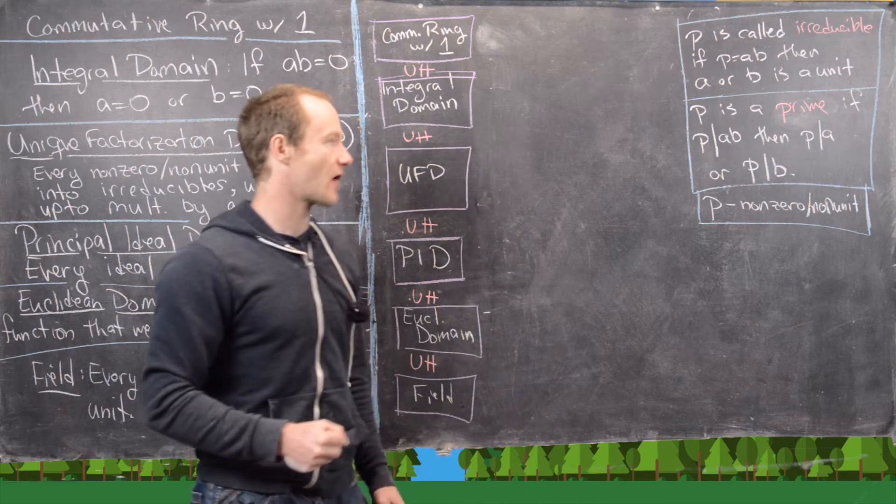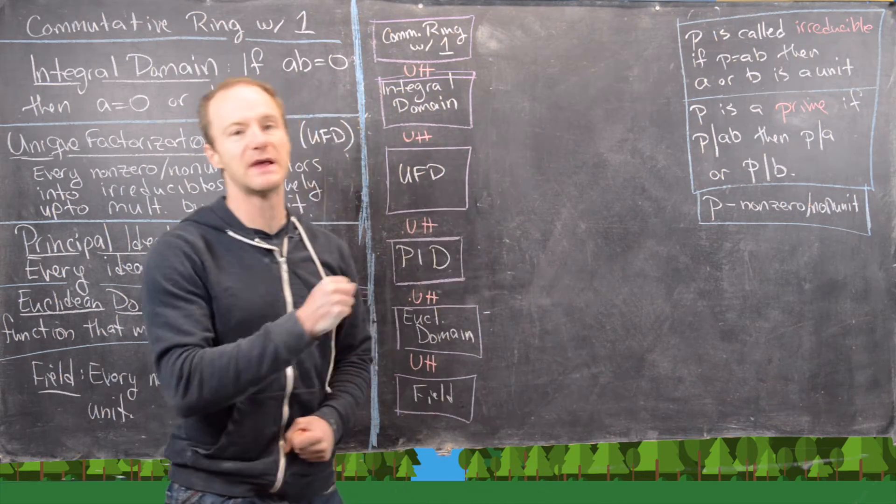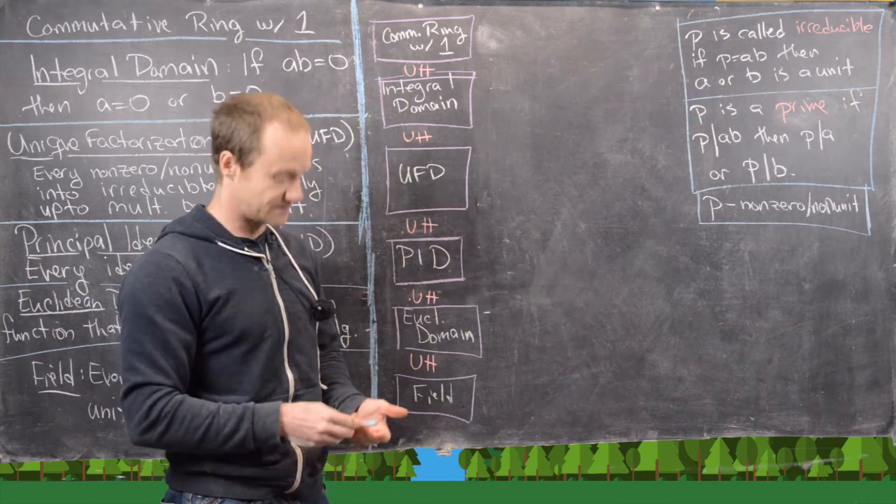Next, we say that P is prime if P divides AB, then P divides A or P divides B.